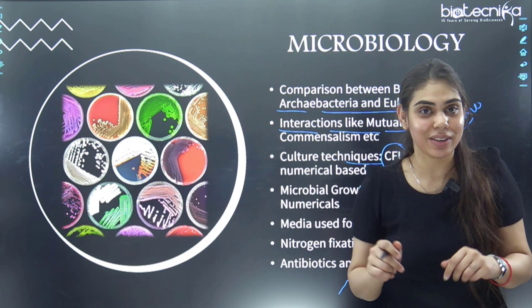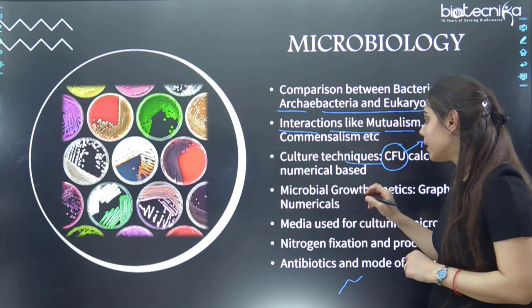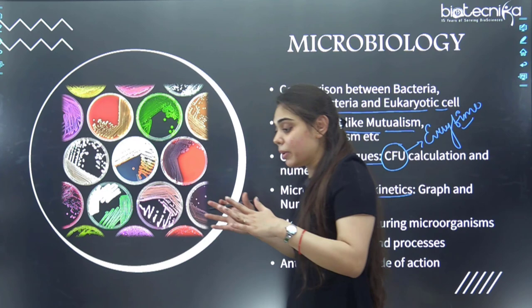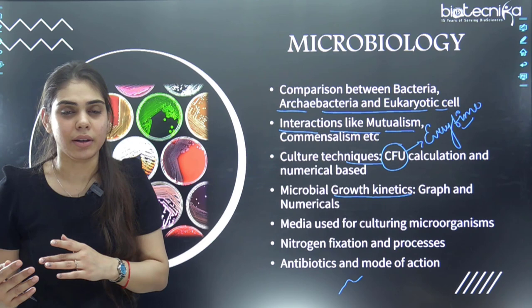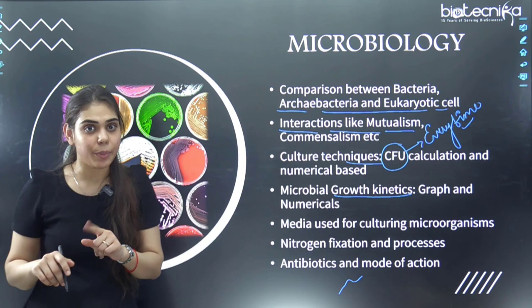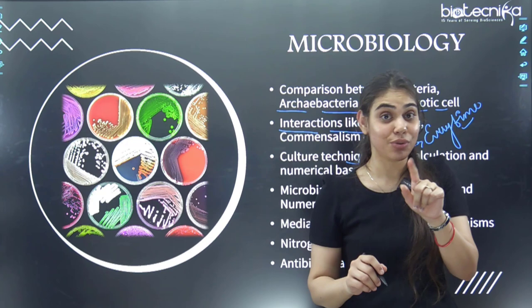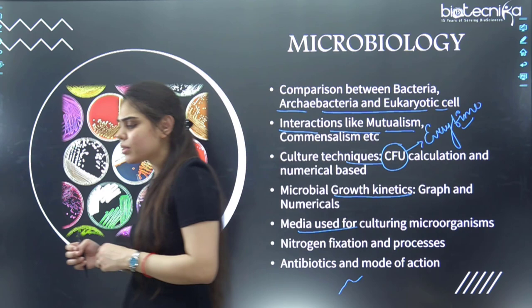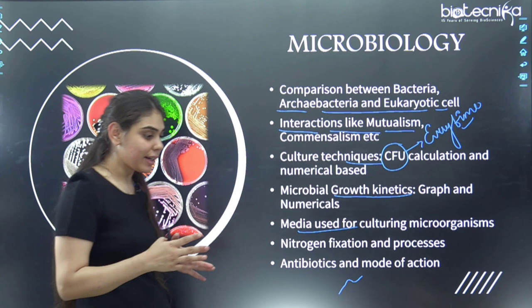Next is growth kinetics — graph as well as numerical based questions. They give a pictorial presentation on a graph about kinetics, whether for animals or microorganisms — the kinetics formula is the same for both. You need to select the best pictorial representation for kinetics. Also, media — sometimes they ask about this, so have a glance at the media for one or two important microorganisms.